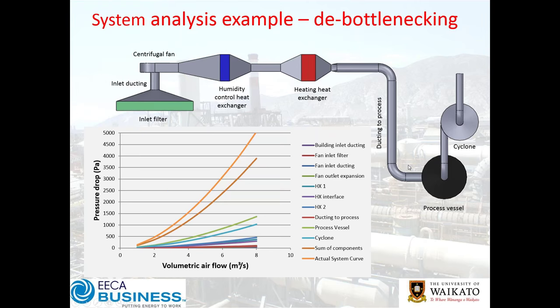Coming back to our example: the first cab off the rank is the thousand pascals in the system effect. It's a matter of looking at where these big losses occur. At a number of New Zealand plants we've been involved with, it's not uncommon to have 1,000–1,500 pascals of pressure drop across a very short transition piece due to poor duct design, nasty turbulence, eddies, and dead flow zones. When you identify these, you can be very targeted, freeing up capacity or saving a lot of energy.